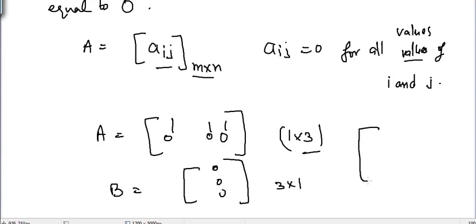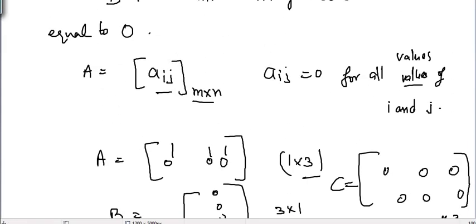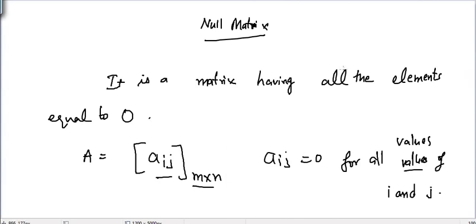Similarly I can write 0 0 0 0 0 0, it's a 2 cross 3 matrix and it's also a null matrix because every element present in the matrix is equal to zero. So that was just a basic definition of null matrix and I hope you understood what is the null matrix. See you guys.